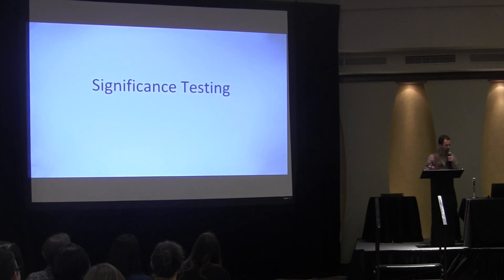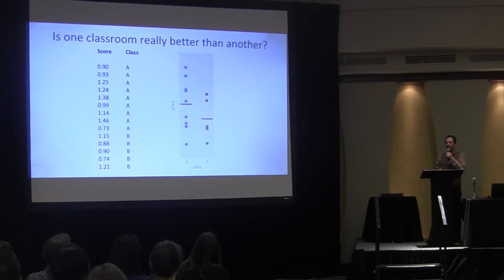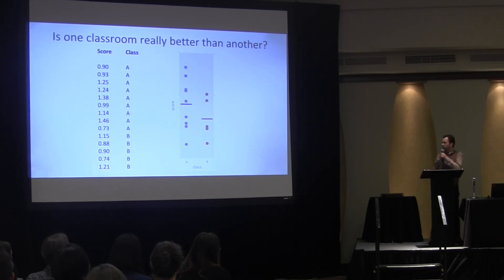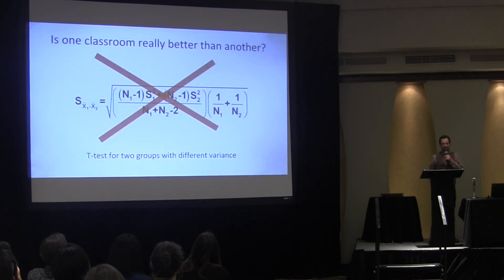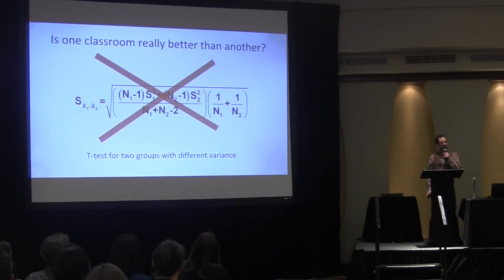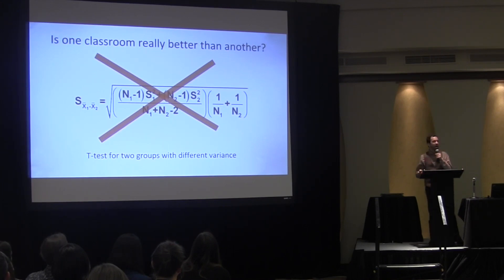But there's more. Significance testing. Let's say you've got test scores data from two different classes. You want to know, is this new teaching method better? Sure, it looks like Class A is doing a little better — the average is higher — but could this just be chance? No! Let's not do this. This is a piece of the two-sided t-test for two samples of different size and different variance. Who wants to apply this today?